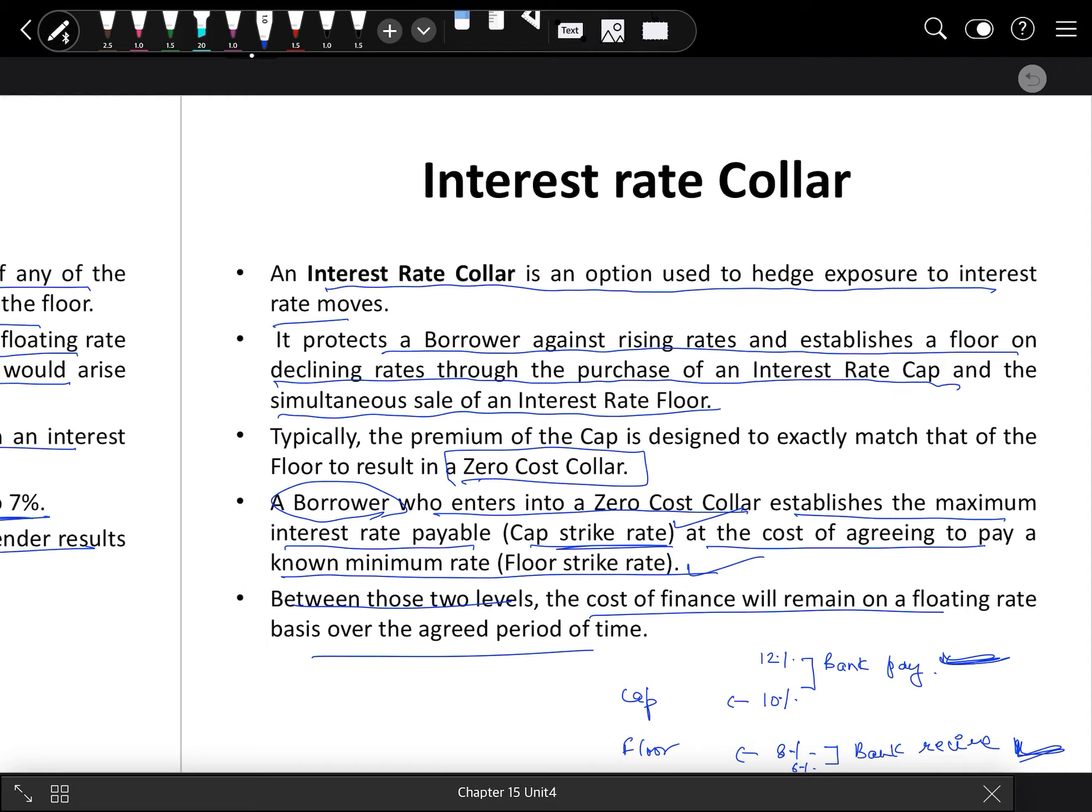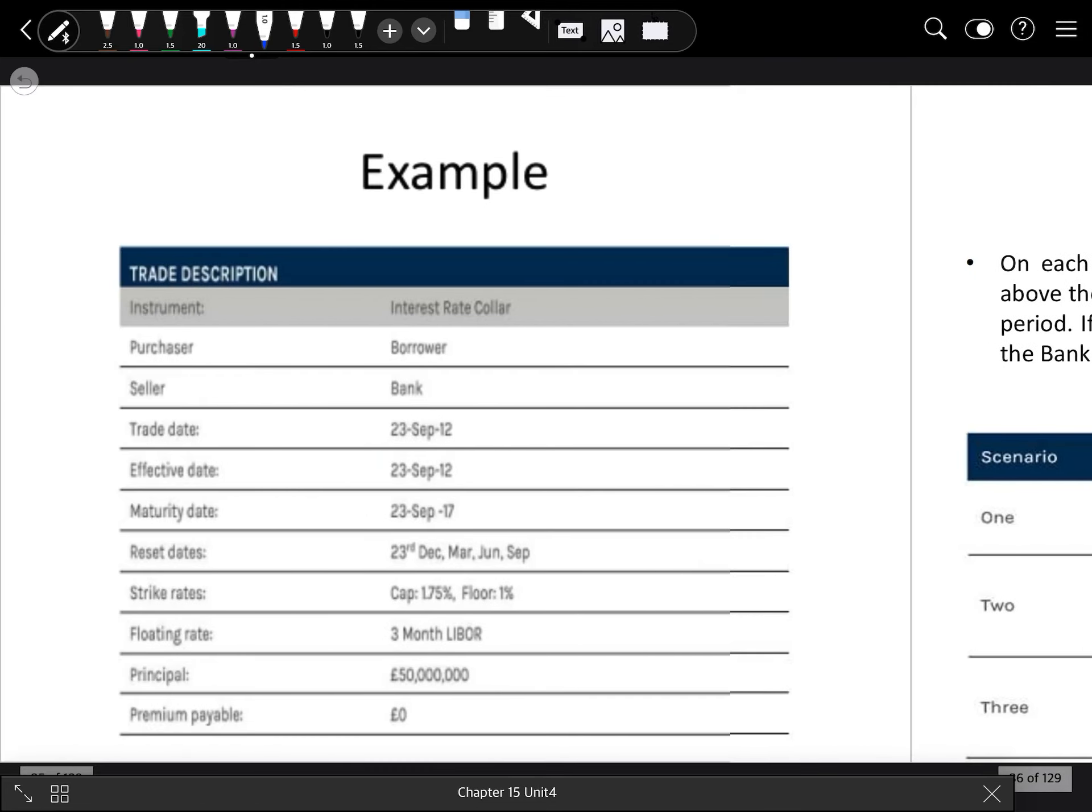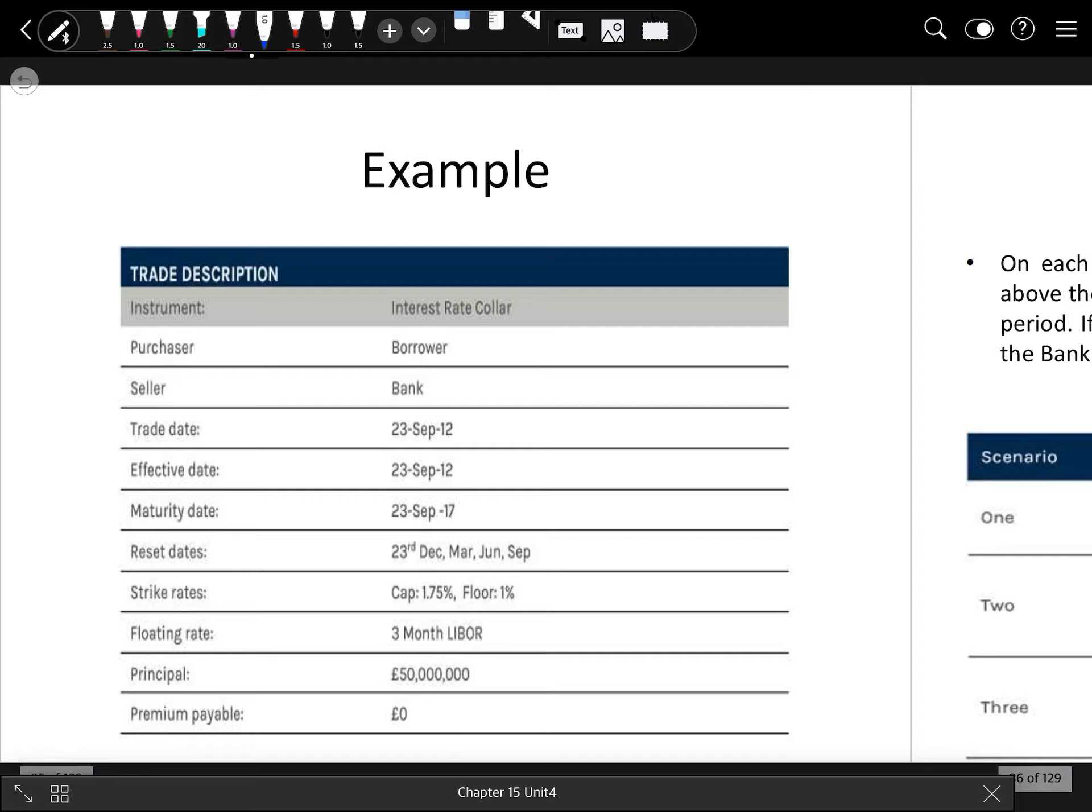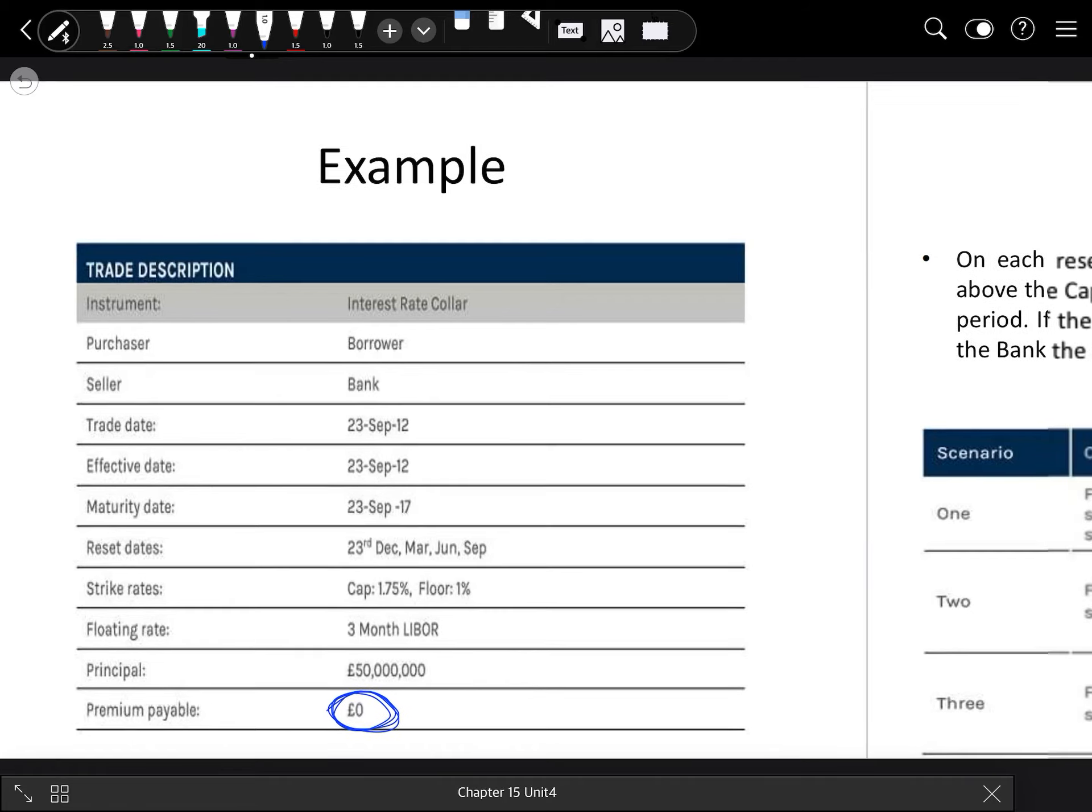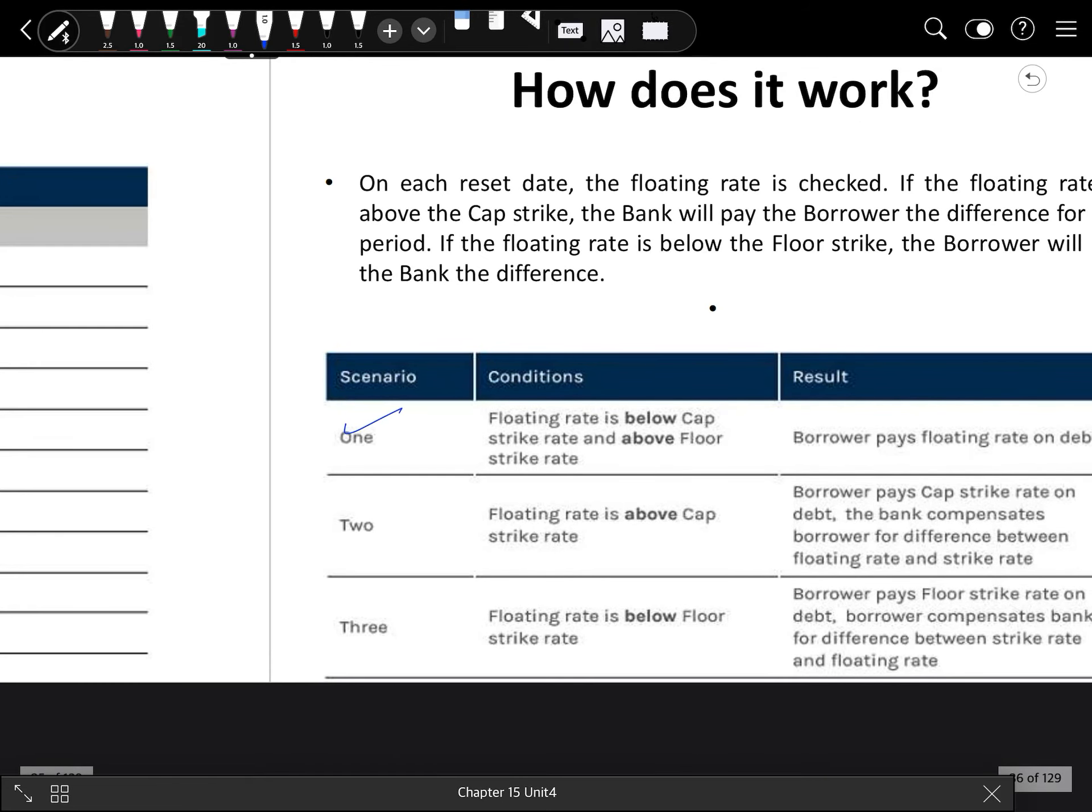This is zero cost collar. I hope this concept is clear. Now we will see an example. Here you can see this example. Premium payable is actually zero because if the borrower is buying the cap hedging technique, then it is selling the floor hedging technique. Now there are three cases. First, if floating rate is below cap strike rate and above floor strike rate. This is our cap strike rate, suppose, and this is our floor strike rate. We are saying the floating rate is below cap rate and above floor rate, so this is 9%.